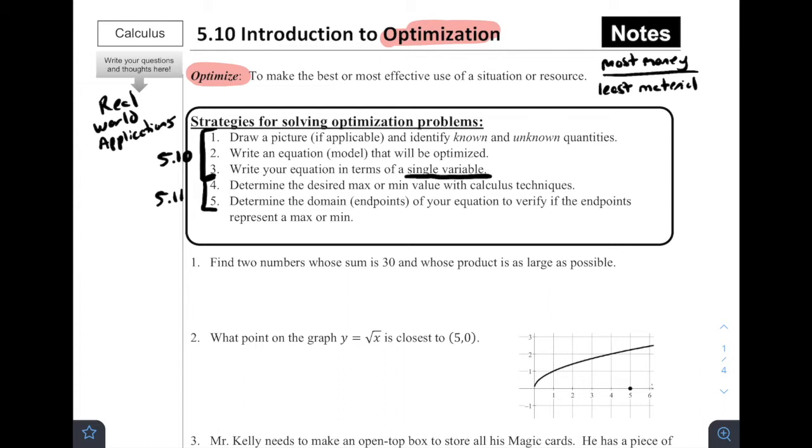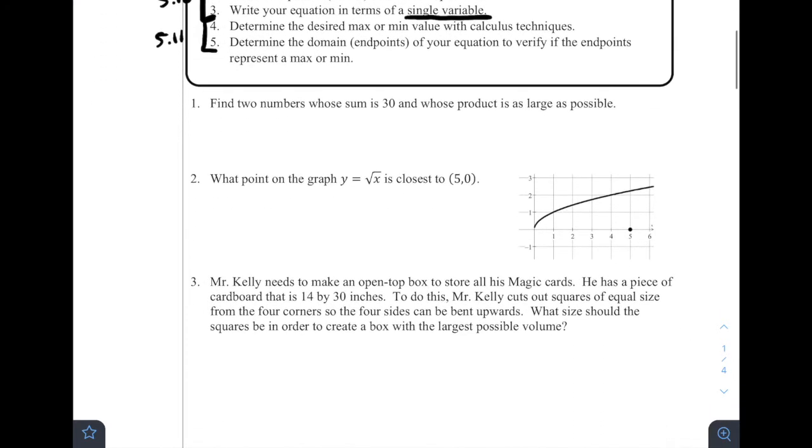Now for the sake of today and for 5.10, we're going to go over these topics. So how you do the first three parts, the second two, four and five, we're going to be going over in 5.11. Those are determining the desired maximum or minimum value with calculus techniques, then determining the domain endpoints of your equation to verify if the endpoints represent a maximum or a minimum. So the idea for today is we're not gonna be solving any of these problems. We're just setting up these problems to go along. So let's try it.